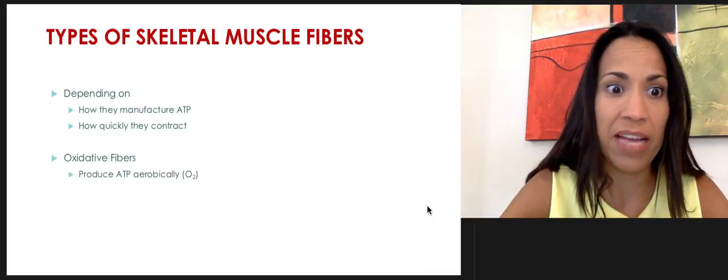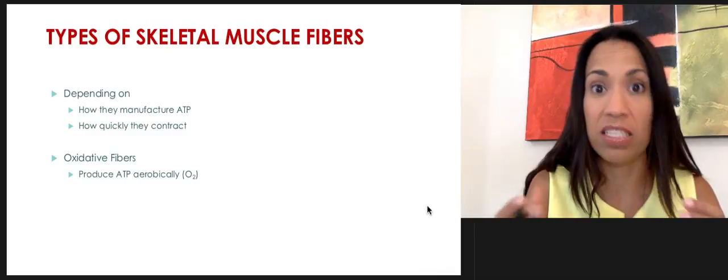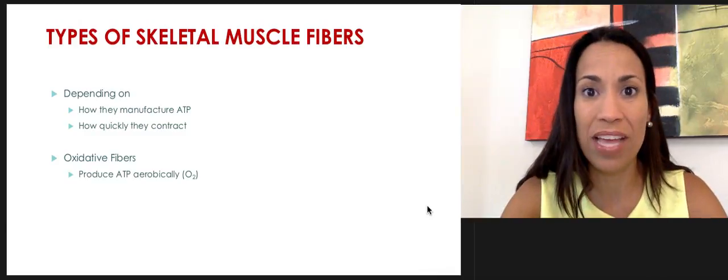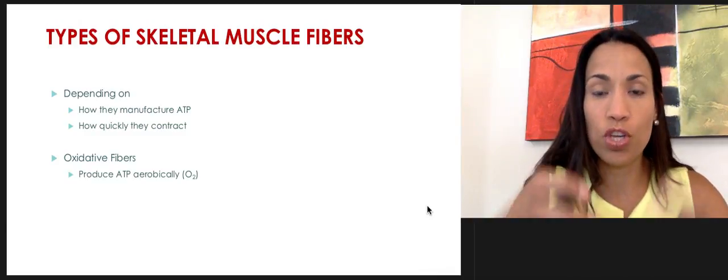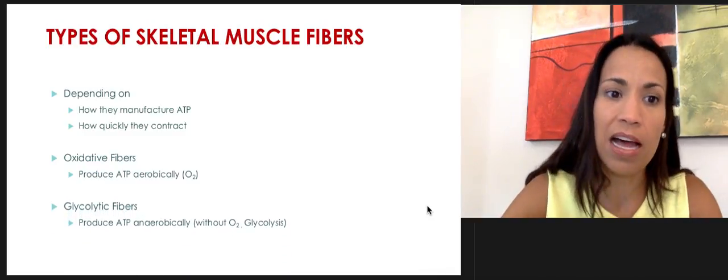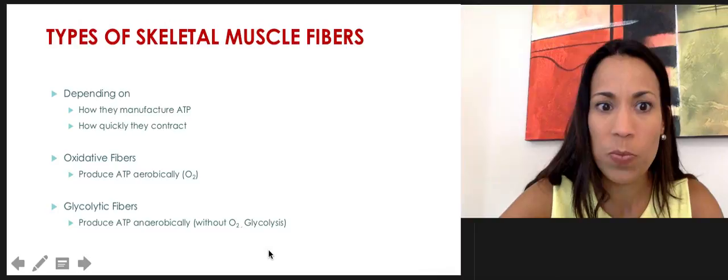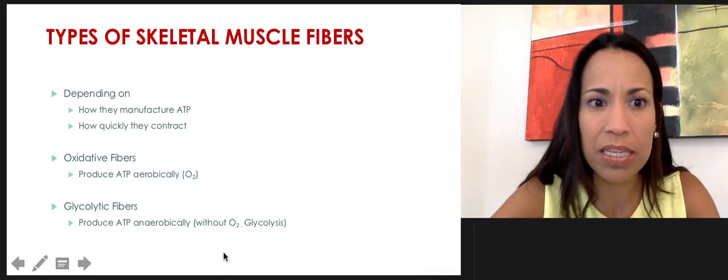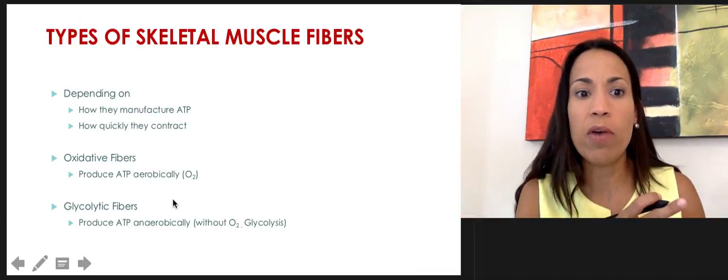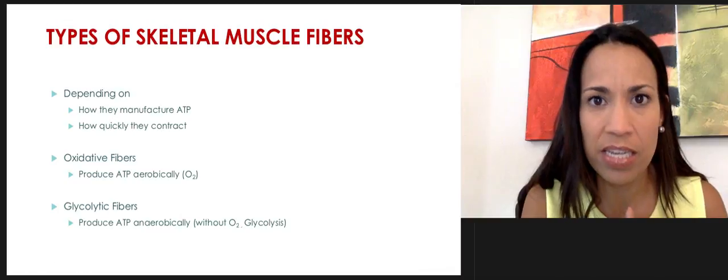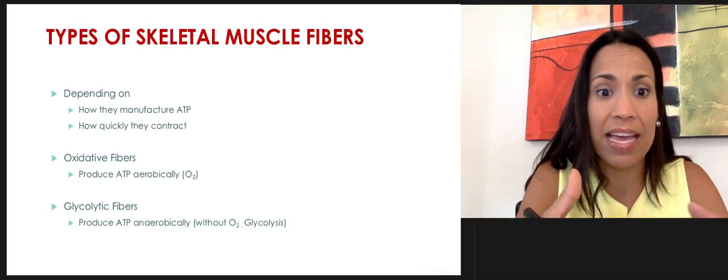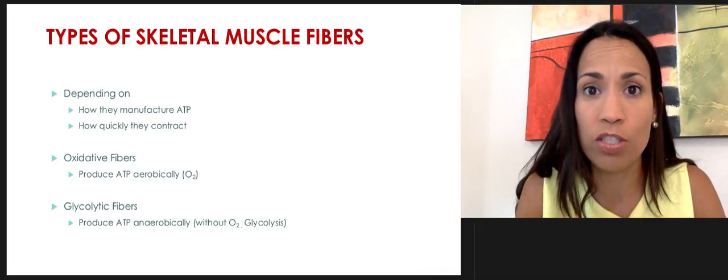They can be oxidative fibers, meaning that they can oxidize oxygen. They can use oxygen to produce ATP. This occurs at the level of the mitochondria in the presence of oxygen. And the second type are glycolytic fibers. These fibers work anaerobically, meaning they can work in the absence of oxygen and produce this ATP without oxygen.